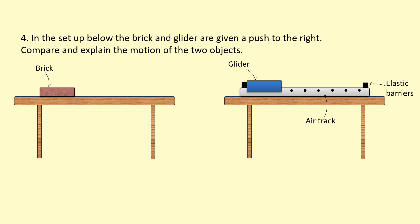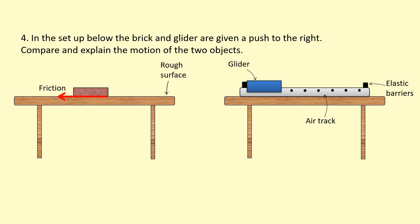In the final example, a brick and a glider are given a push to the right. The brick eventually stops — this seems to contradict Newton's First Law, but there is a force acting on it: friction from the rough surface decelerates it. Without that friction, the brick would have kept going. The friction is an unbalanced force causing it to slow down.